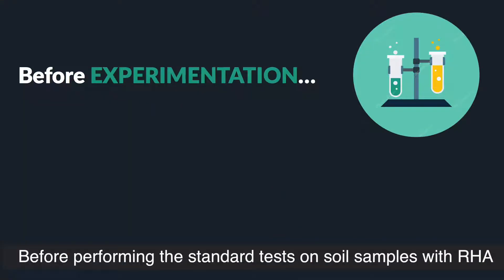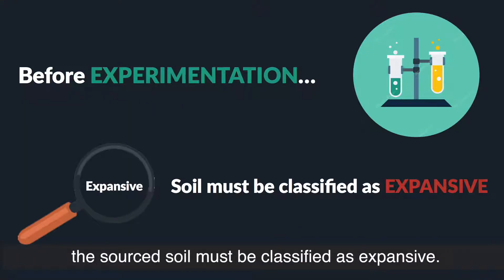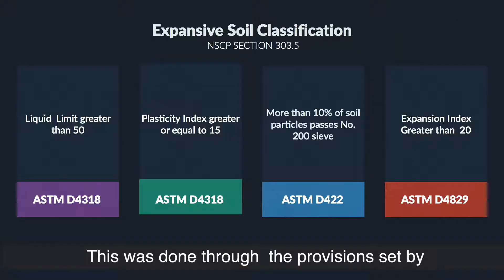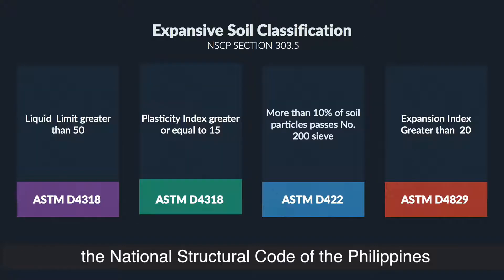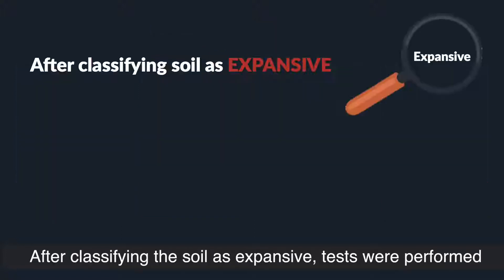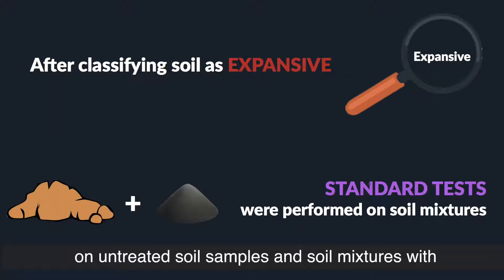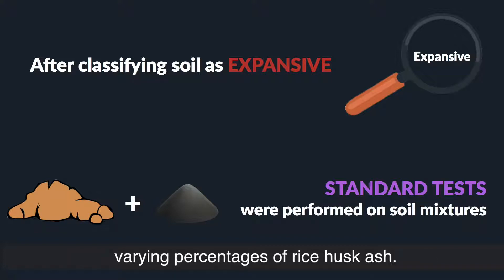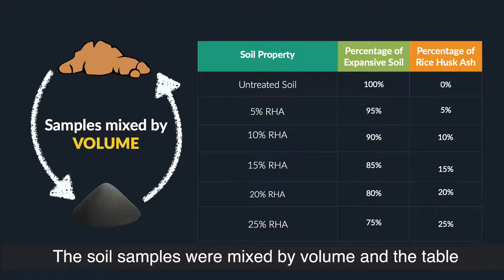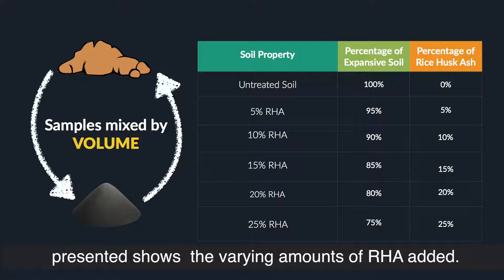Before performing standard tests on soil samples with RHA, the source soil must be classified as expansive. This was done through the provisions set by the National Structural Code of the Philippines. After classifying the soil as expansive, tests were performed on untreated soil samples and soil mixtures with varying percentages of rice husk ash. The soil samples were mixed by volume, and the table presented shows the varying amounts of RHA added.